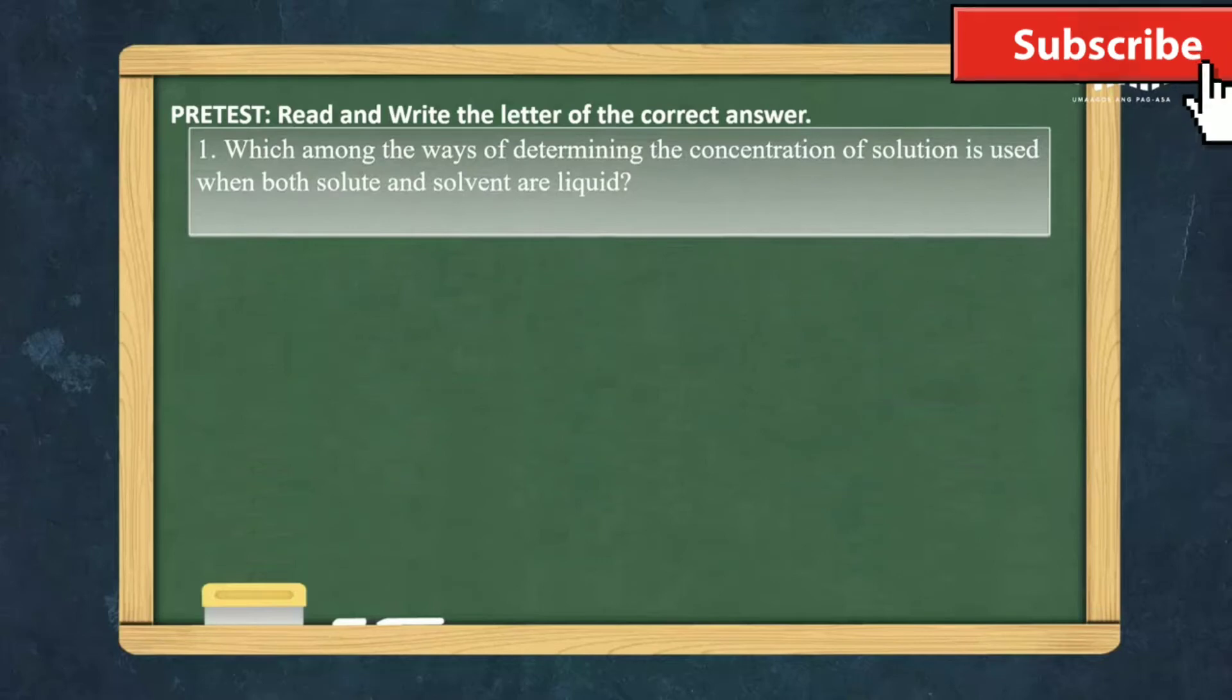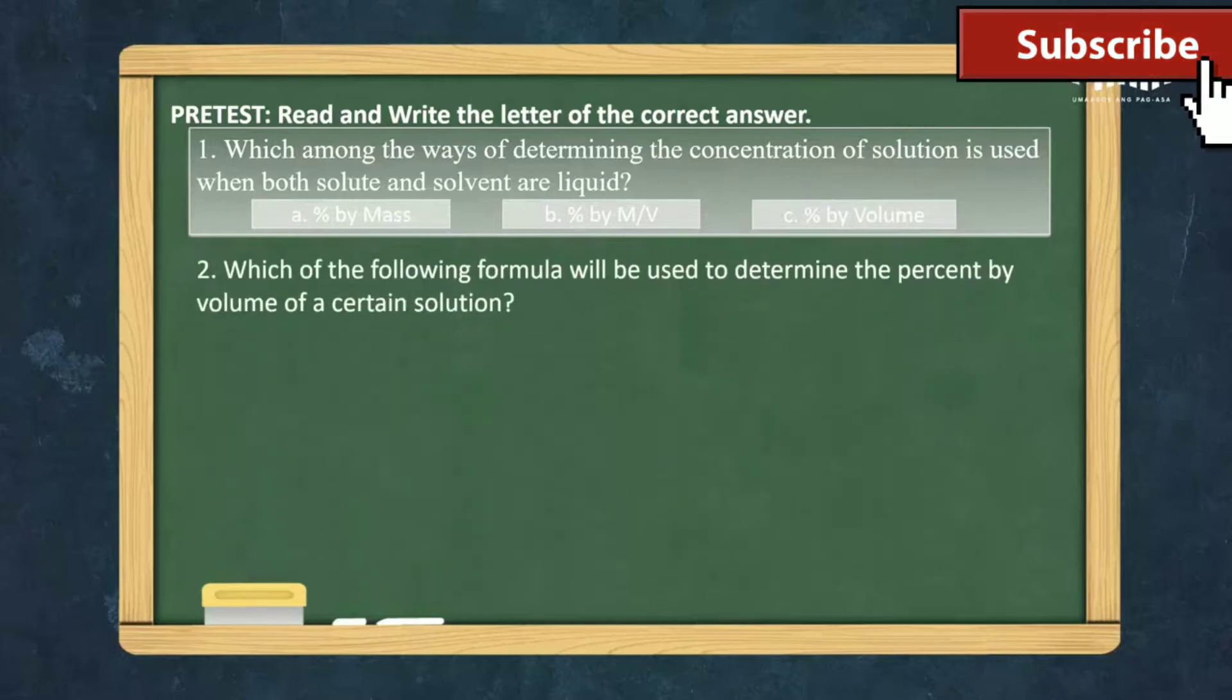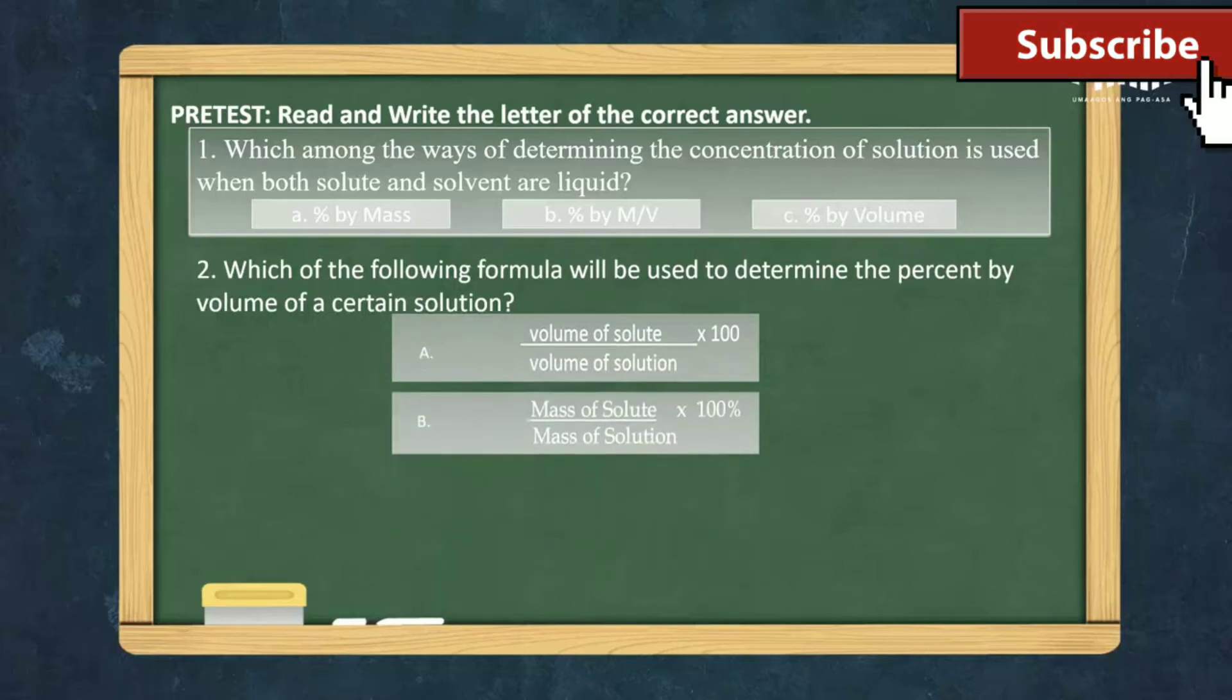Which among the ways of determining the concentration of solution is used when both solute and solvent are liquid? A, B, or C? Number two: Which of the following formula will be used to determine the percent by volume of a certain solution? A, B, or C?